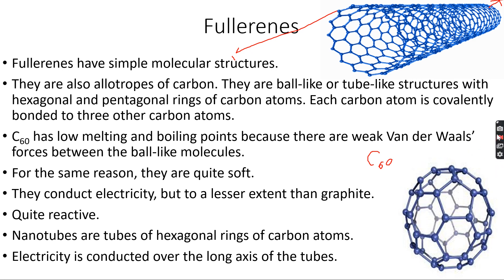And they have hexagonal rings of carbon atoms, you can see. And electricity, again in nanotubes as well, each carbon atom is bonded to three other carbon atoms, so each carbon atom has one free electron.